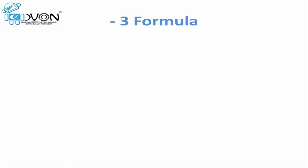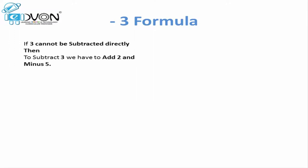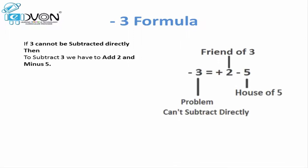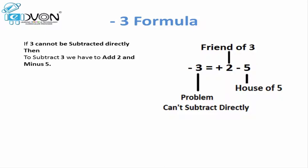Let's consider a situation where we are doing a calculation either on fingers or on abacus, and a situation arises where we cannot directly subtract 3. To subtract 3 indirectly, we will take help from the friends and apply the formula. The formula is: to subtract 3 indirectly, we add 2 and minus 5. So minus 3 equals plus 2 minus 5. In this formula, minus 3 is our problem, plus 2 is the friend of 3, and minus 5 is our house or base.